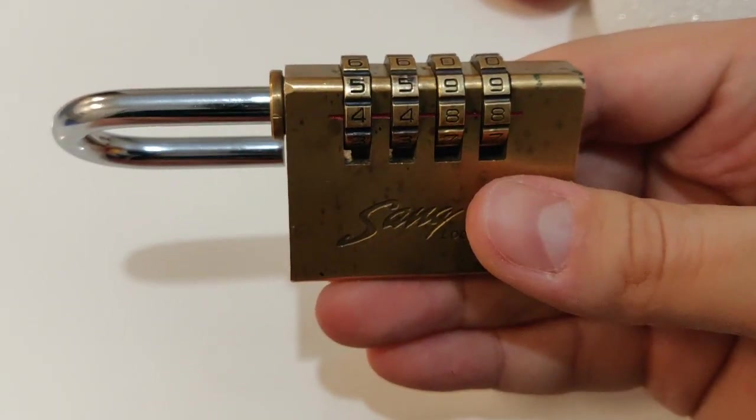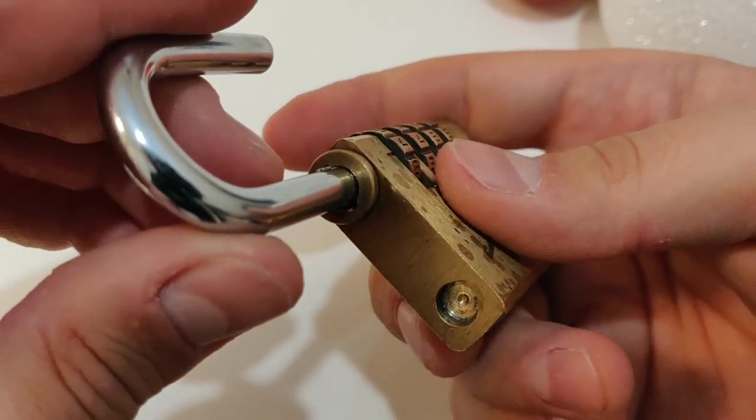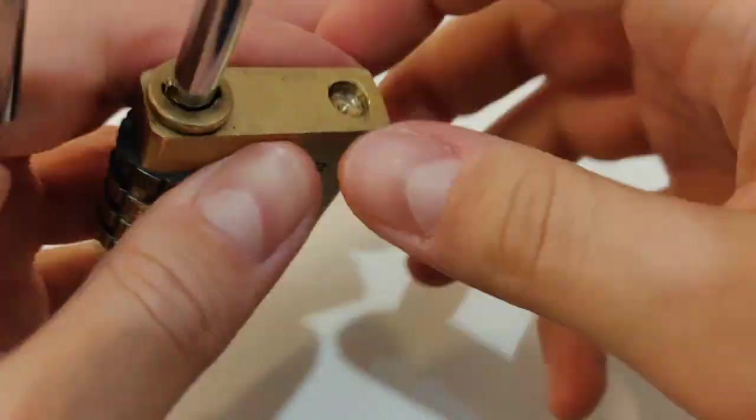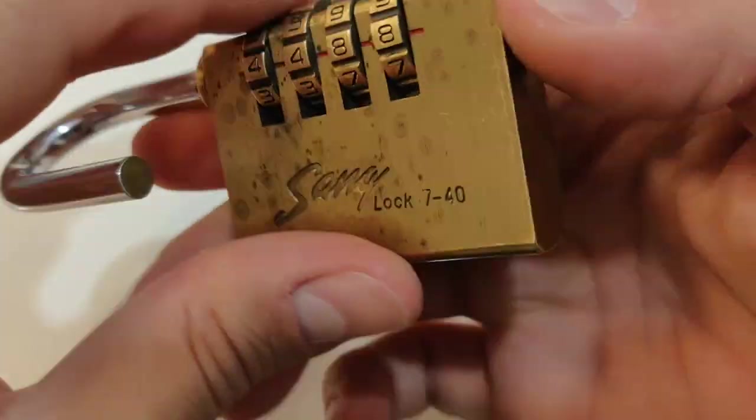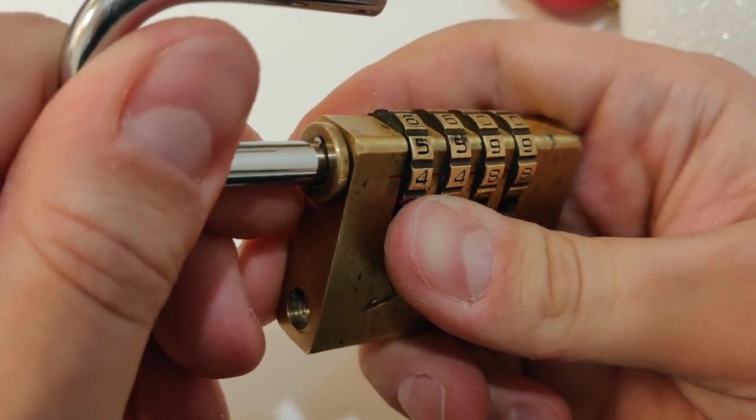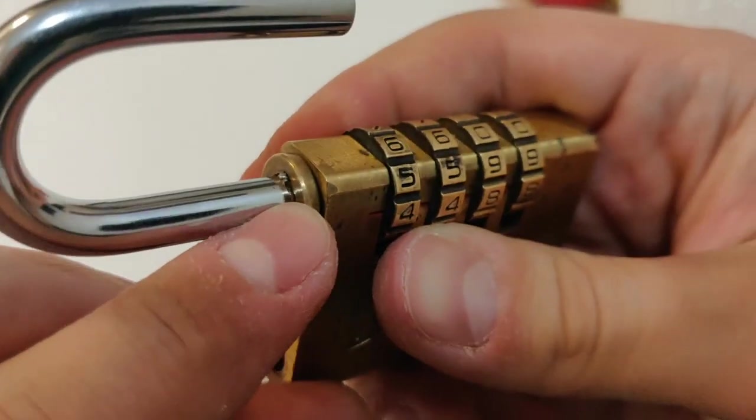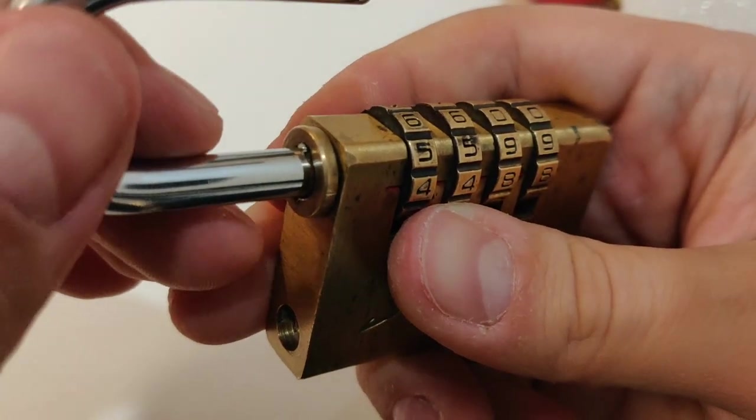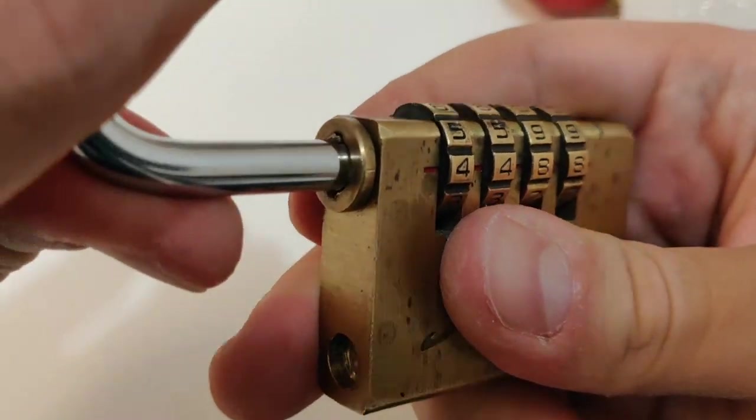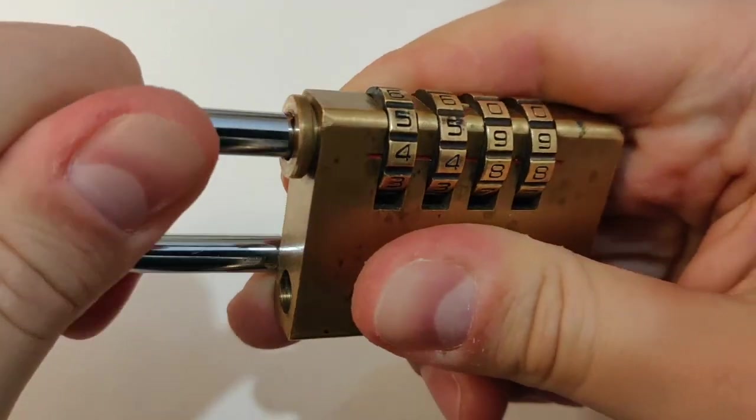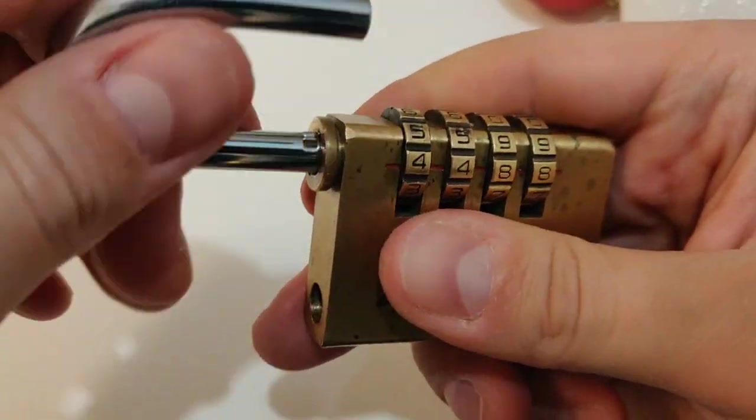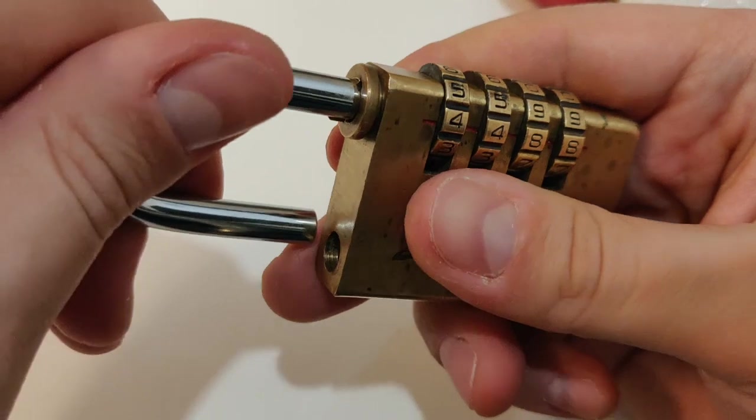I will now show you how to disassemble it. The easiest way for me to disassemble this is to put the combination at 4488, put it in the middle notch, and just turn it. Usually, you can disassemble this way.